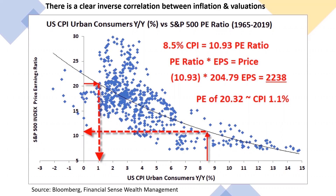When we look at today's 8.5% annual inflation rate, given this relationship, it would give you an implied P/E ratio of 10.93. From the bottom, the solid red arrow marks the current inflation rate, and as it goes left, the arrow shows you where this P/E ratio would be.